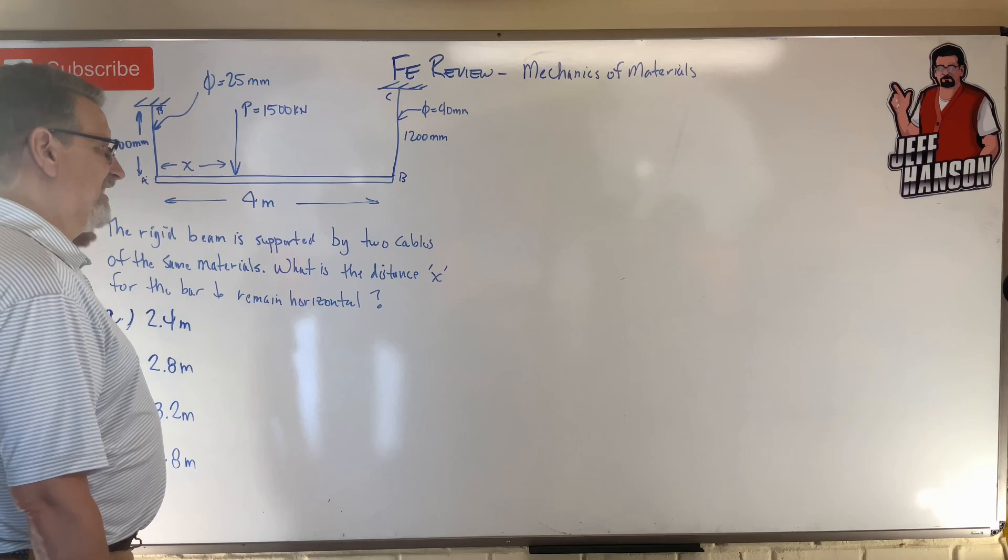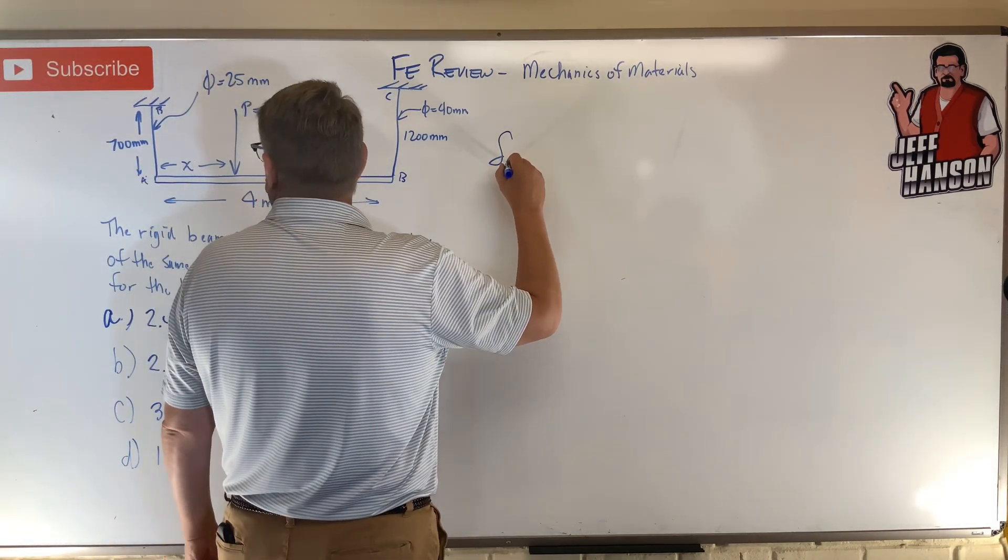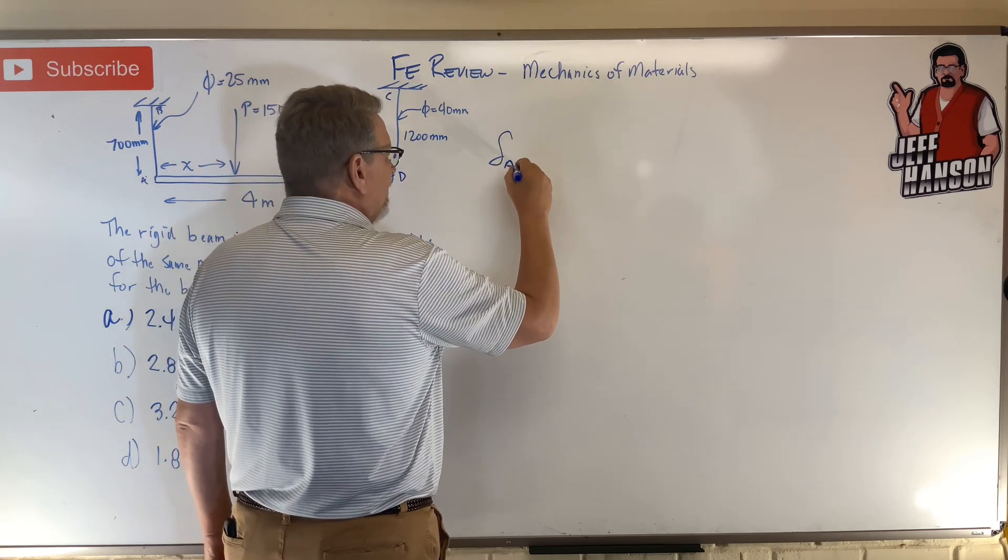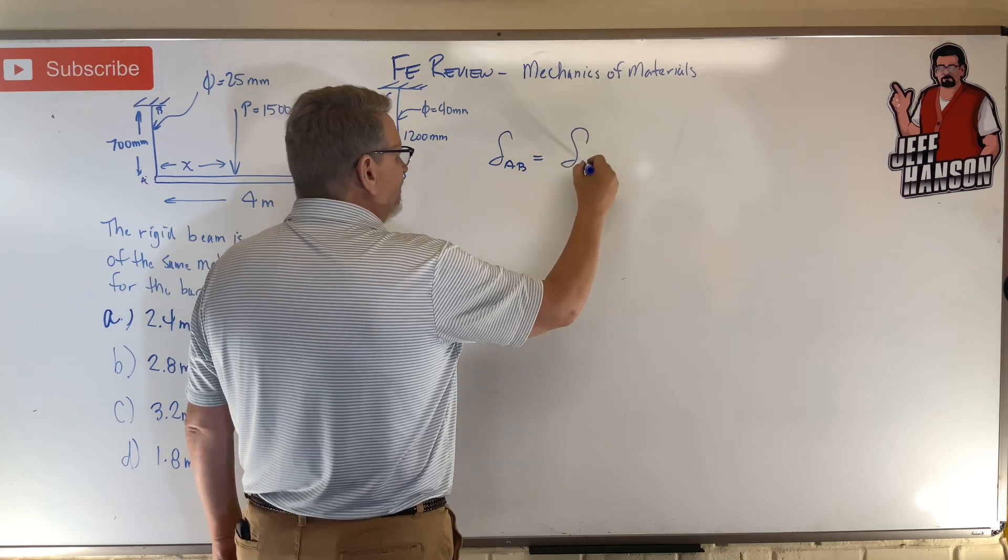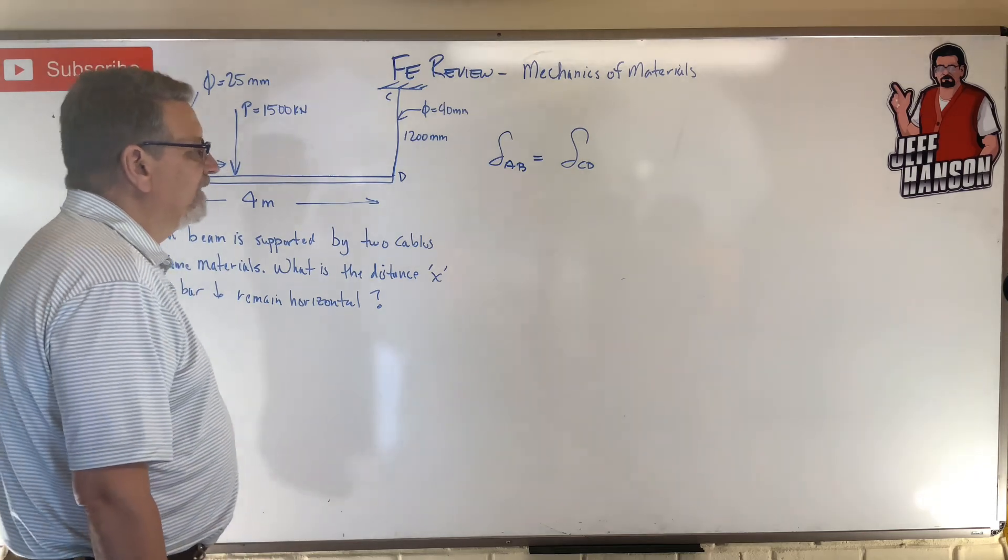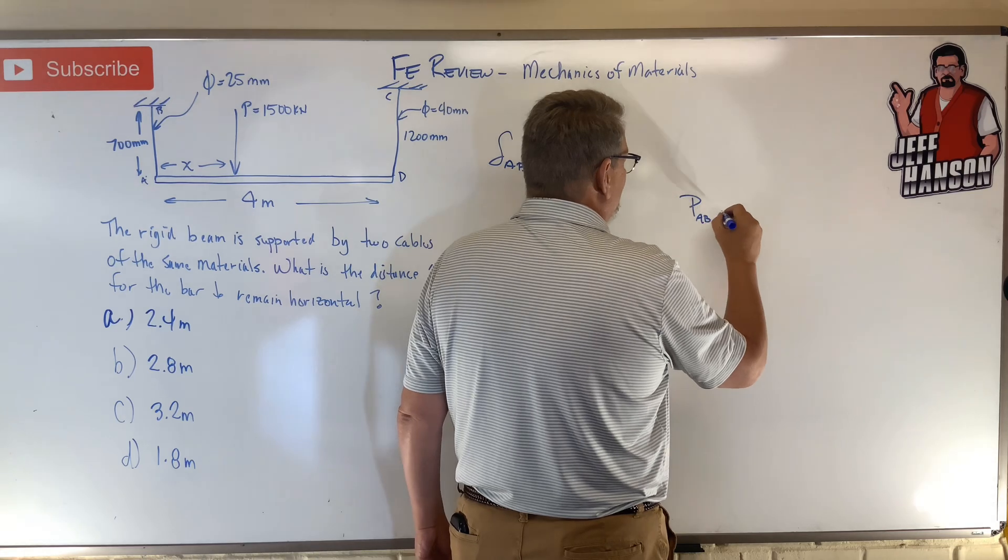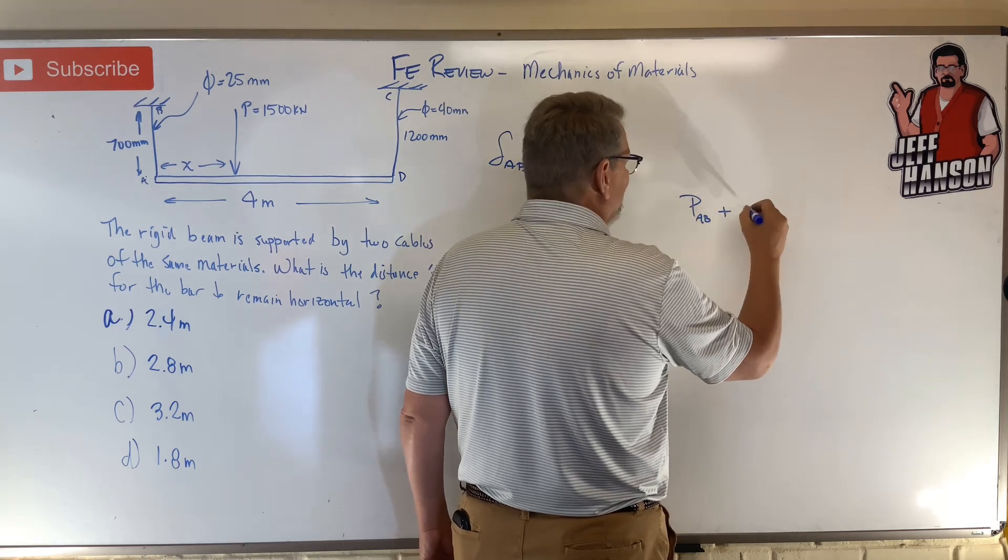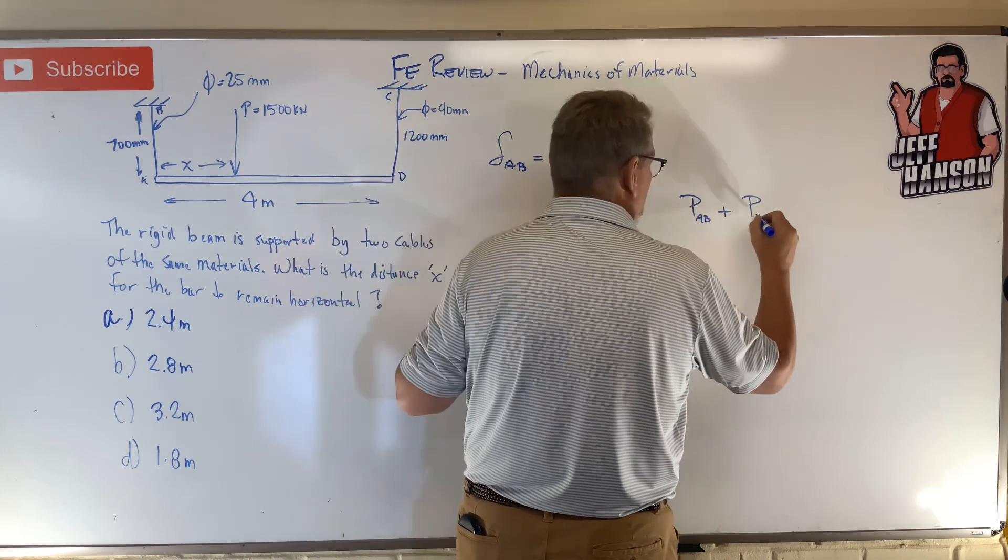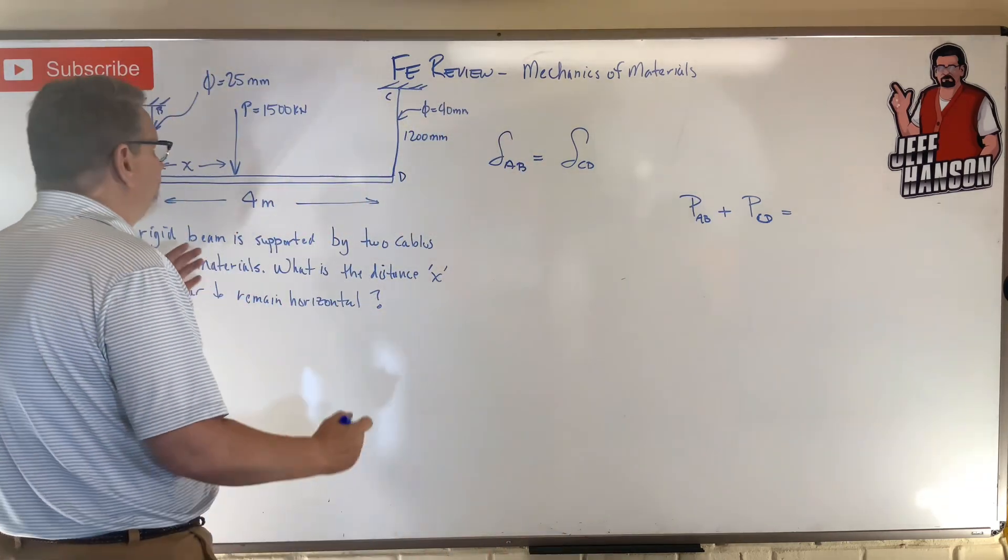So Delta for AB has to equal Delta for CD. Those two have to be the same. What else do I know? I know that the force, let's call it P in AB, plus the force in CD has to equal what? Up stuff has to equal the down stuff.